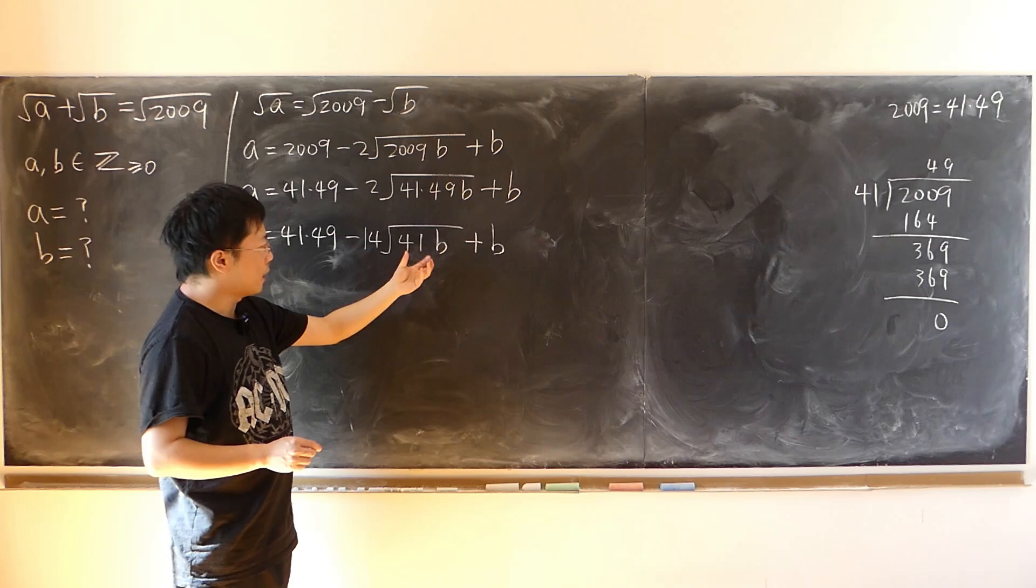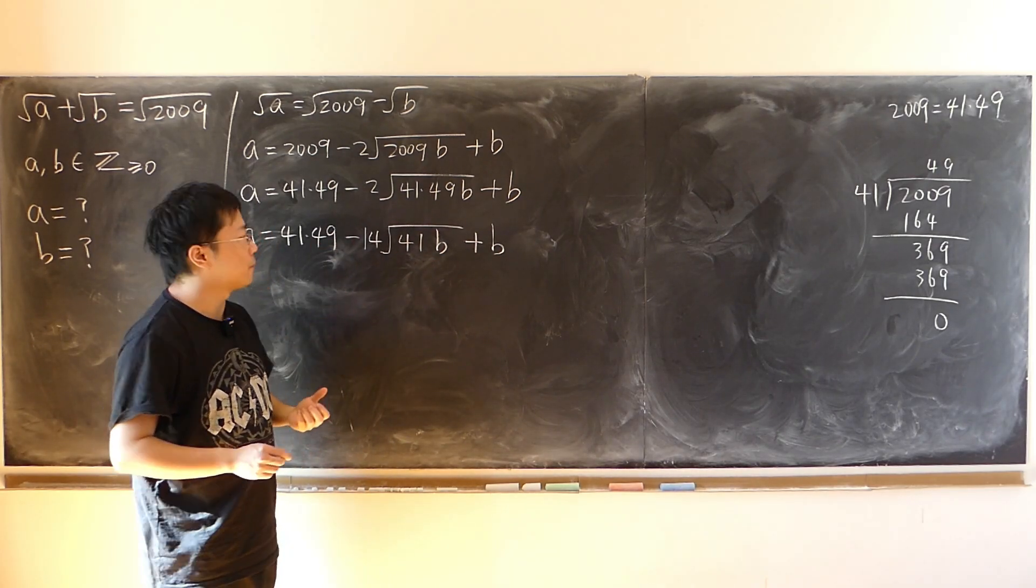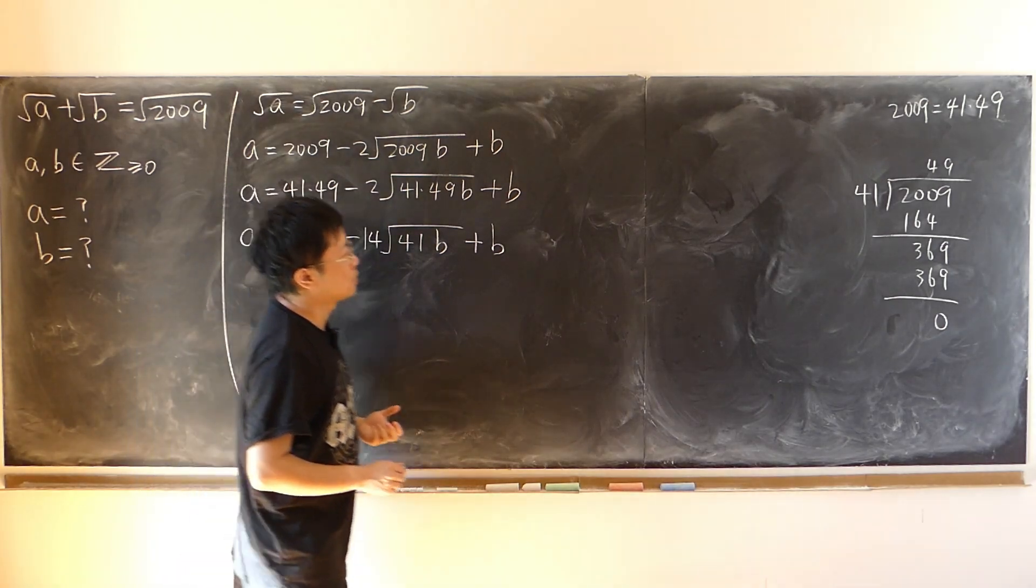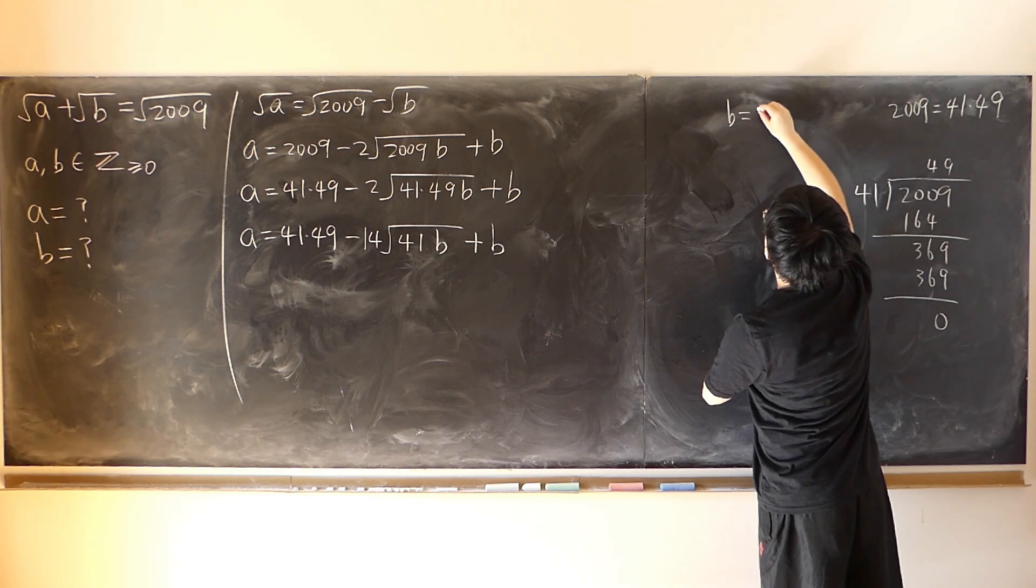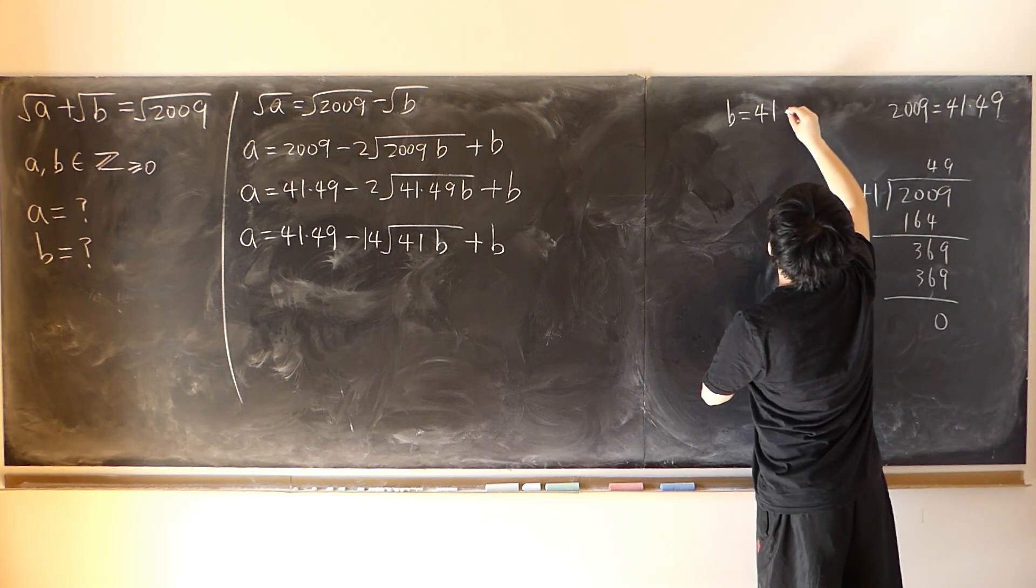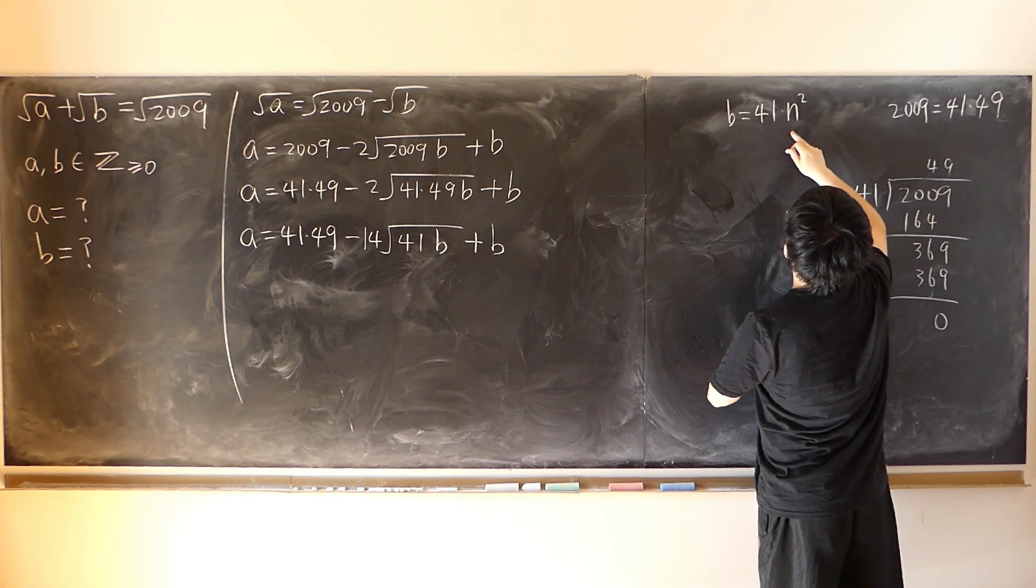And as for the rest of factor of b, we also have to make sure it's a perfect square. So in other words, we just have to make sure b is in the form of 41 times n square, where n is a non-negative integer.